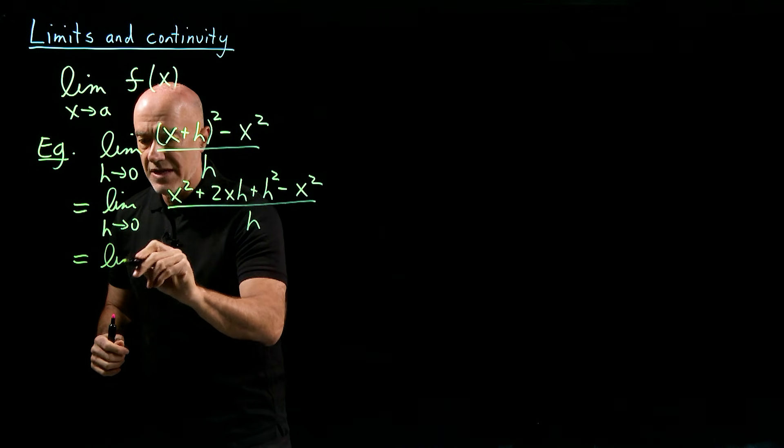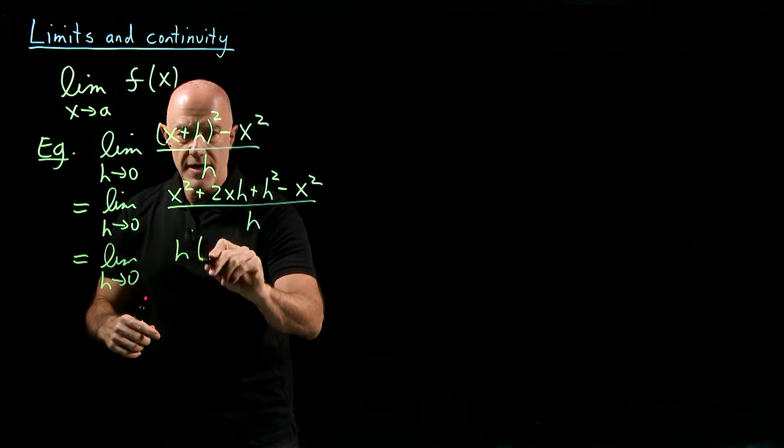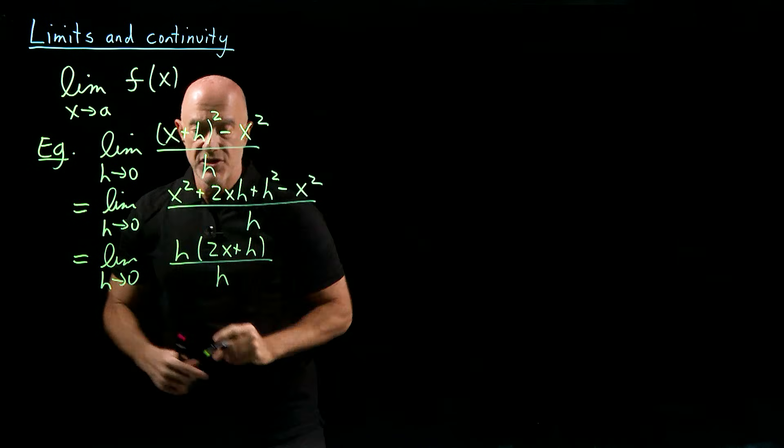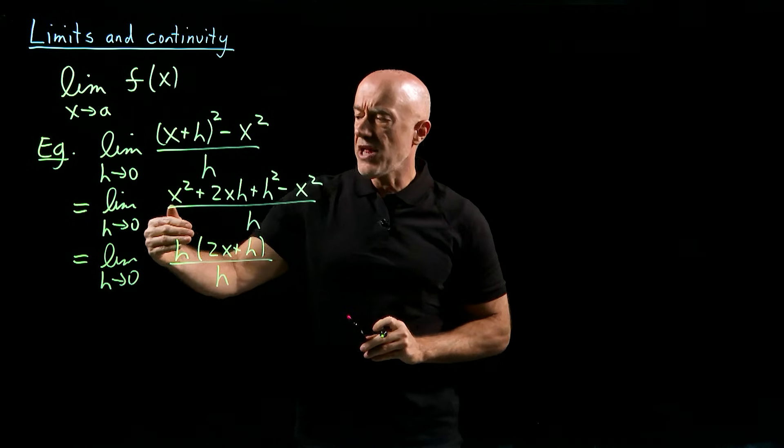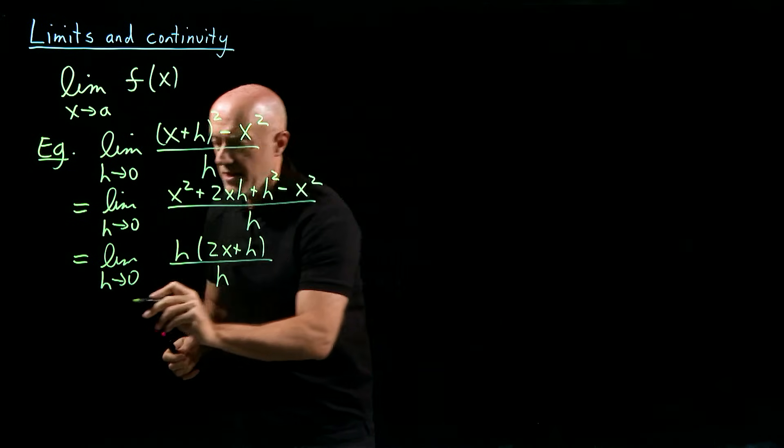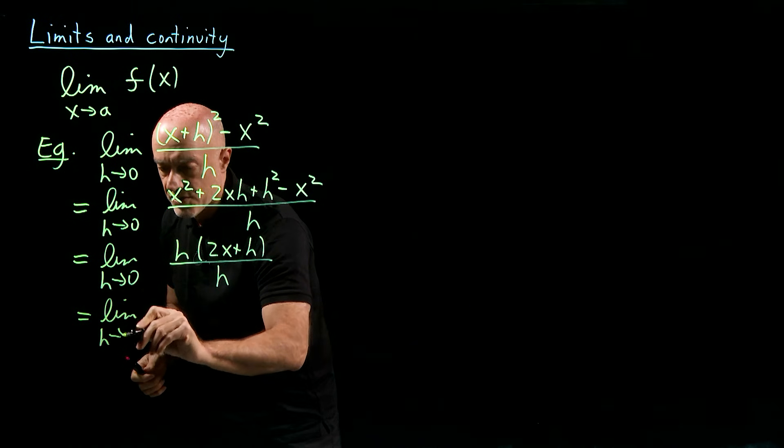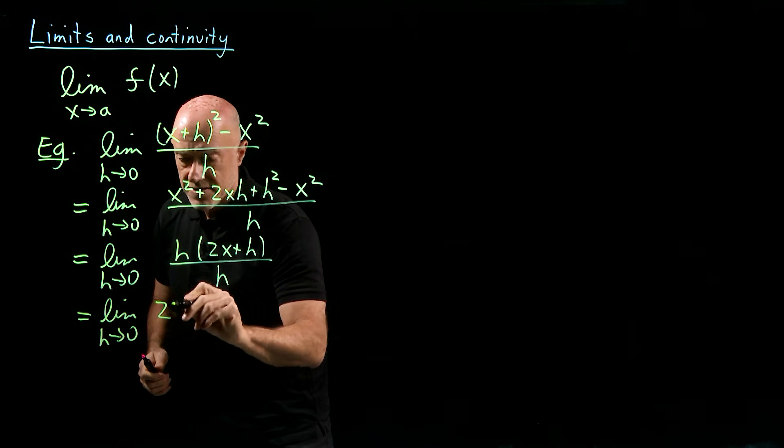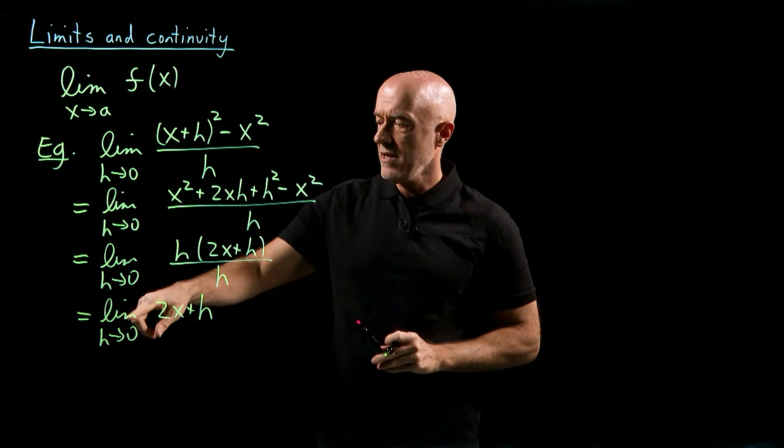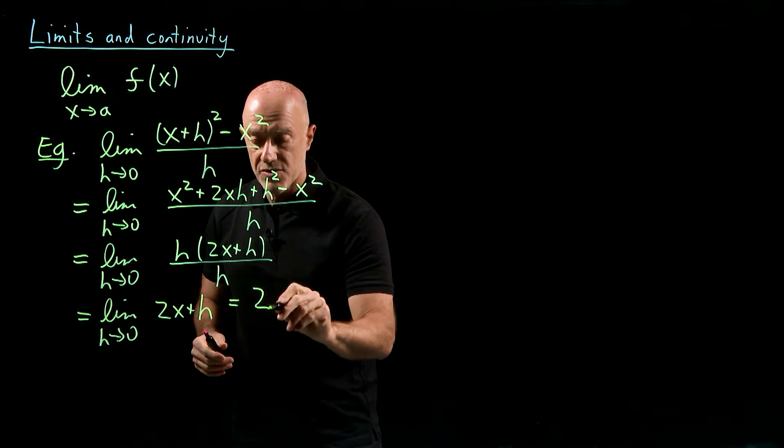So that becomes the limit as h goes to 0, h times (2x + h) divided by h. We still have 0 over 0, but now we see that h can be cancelled. So that becomes the limit as h goes to 0 of 2x + h. And at this point, we can substitute in h equals 0 and obtain the limit 2x.